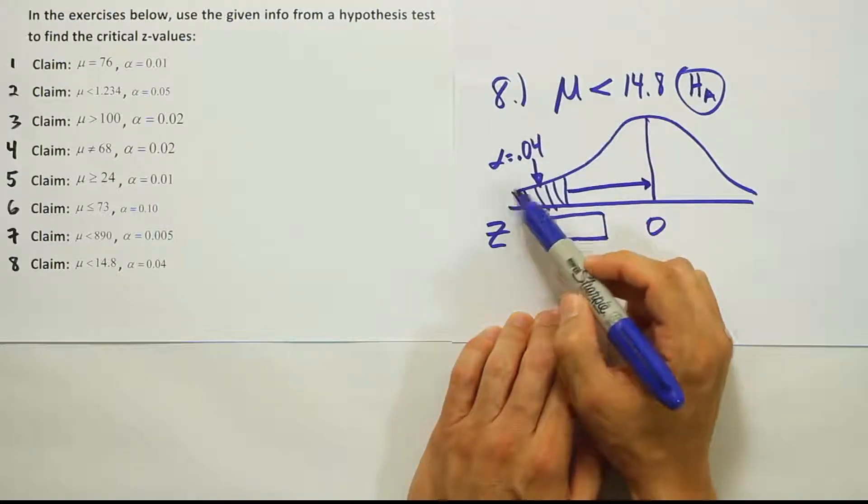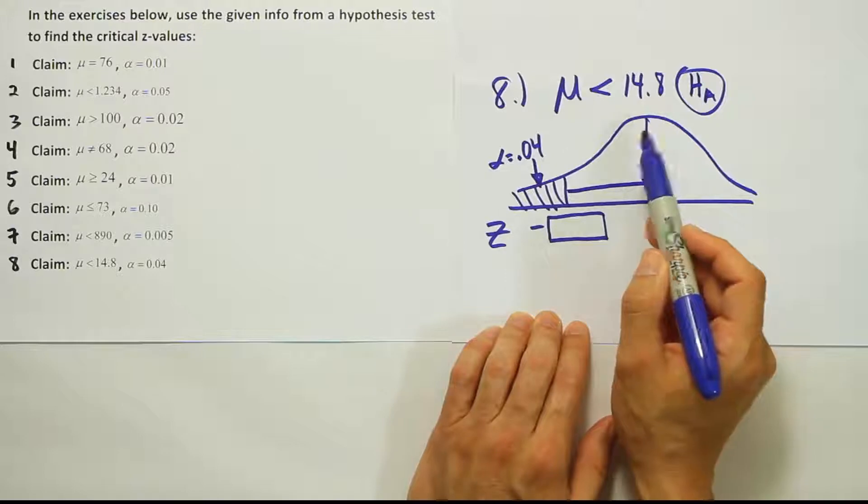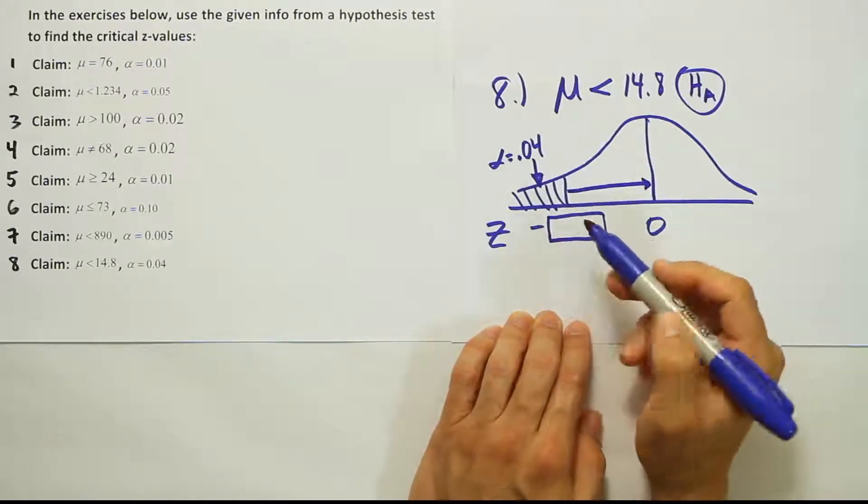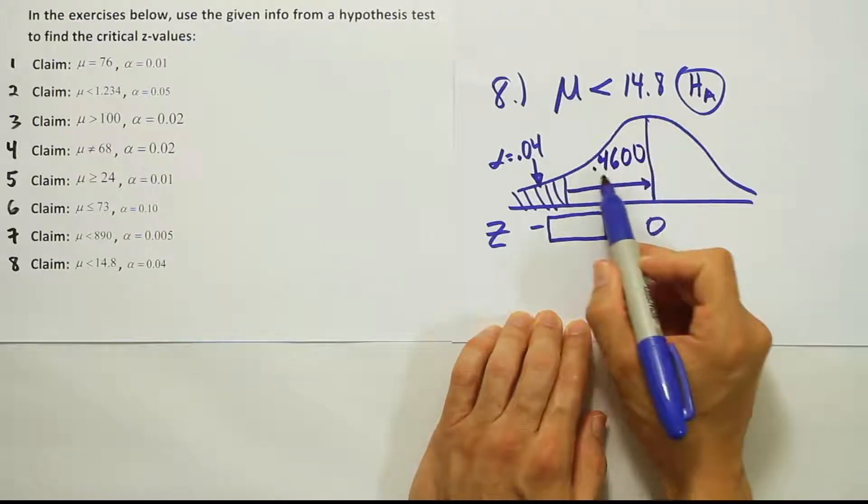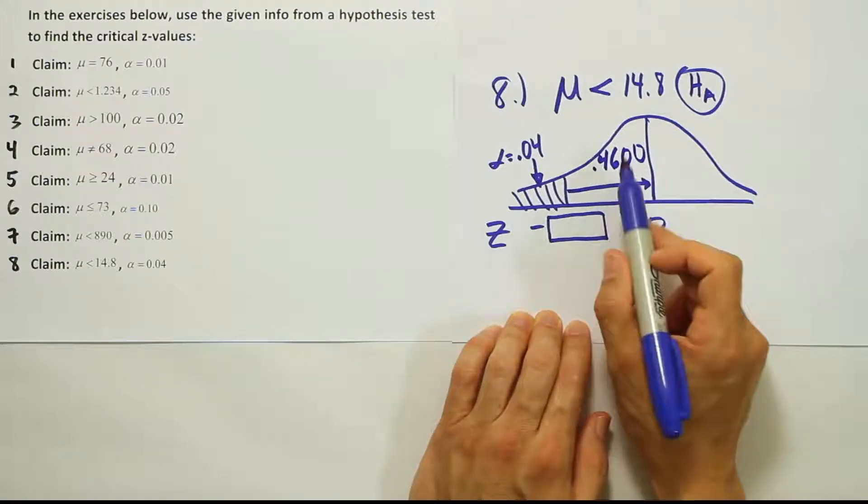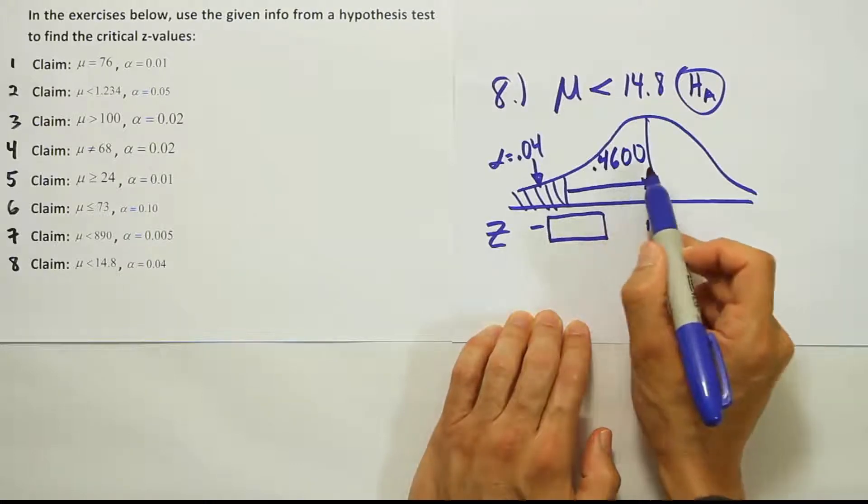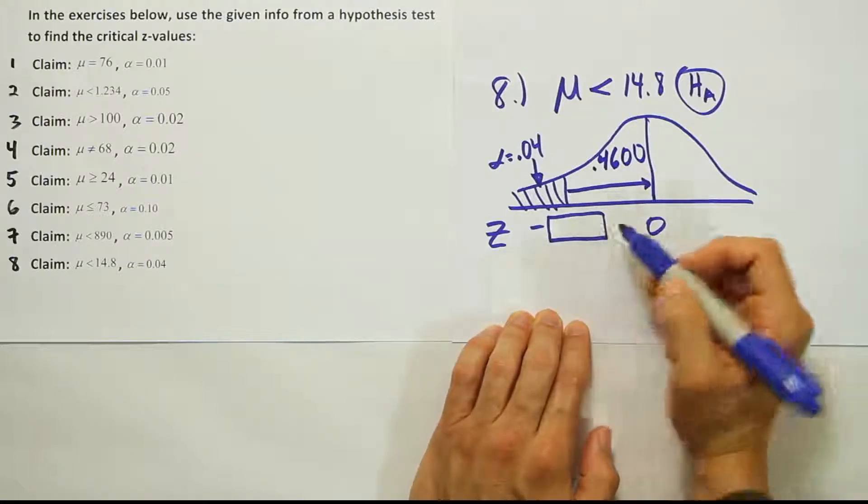Well, 50% of the curve has 0.5 area in it, right? And then if you subtract 4% from 50%, you get 0.4600 or 4600, right? 46% and 4% make 50%. So we're going to look up this 4600 in order to find the corresponding z-score on the table.